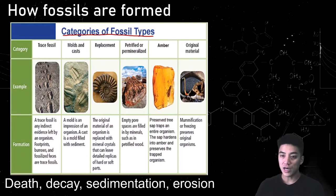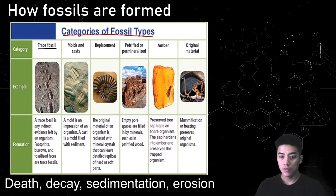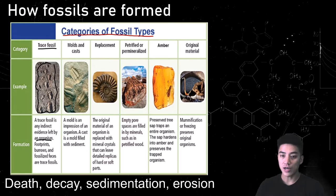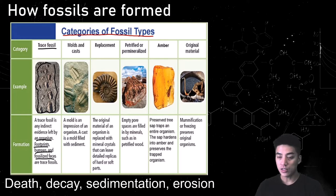There are six categories of fossil types. You have your trace fossils, which are pretty much anything left behind by the animal or organism. This might include tracks, burrows, nests, even feces — anything but the organism itself.